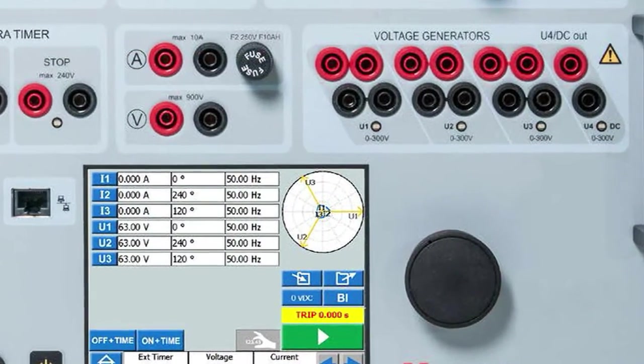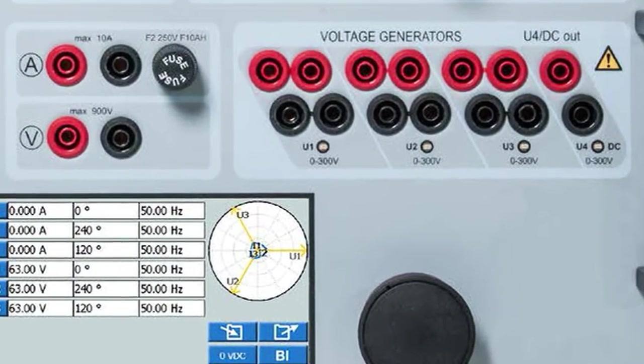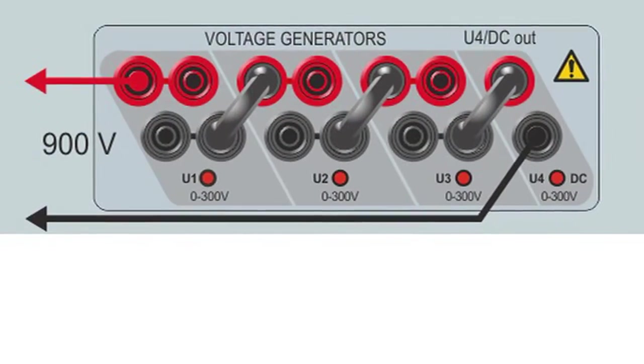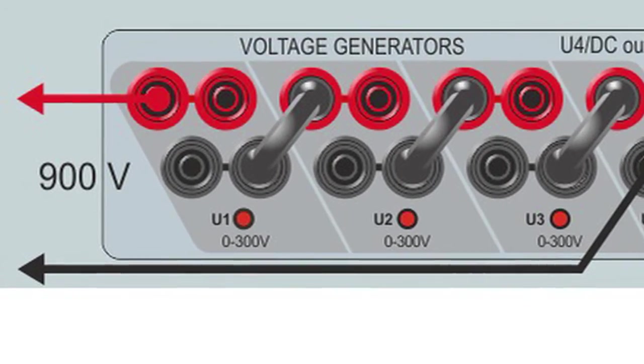The voltage generators likewise can be used separately, in parallel, or in series to deliver up to 300 volts in multi-phase configuration or up to 900 volts in single-phase configuration.